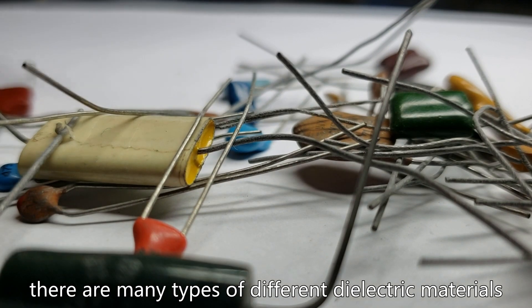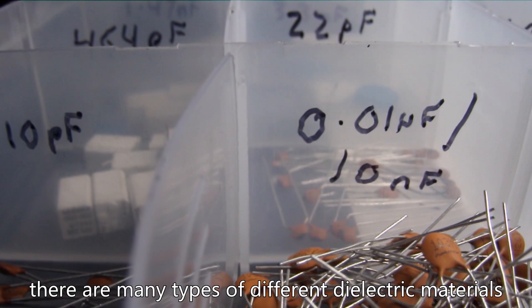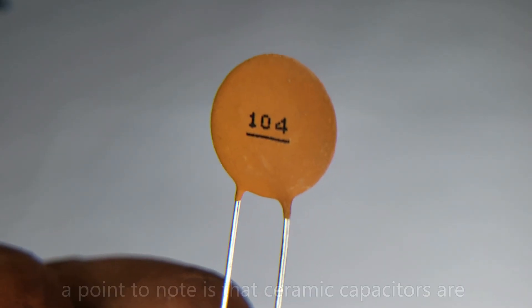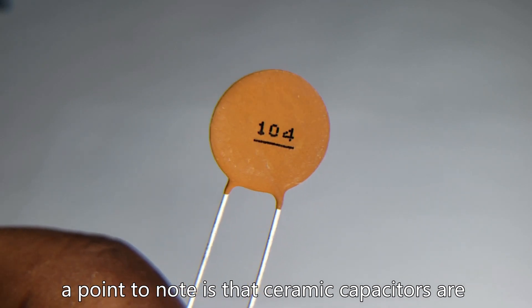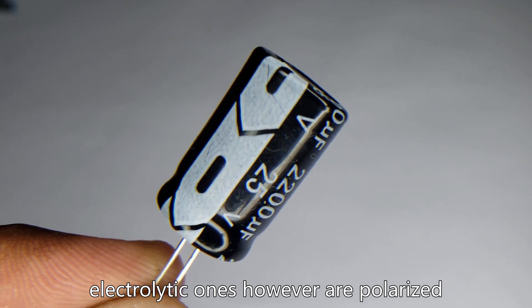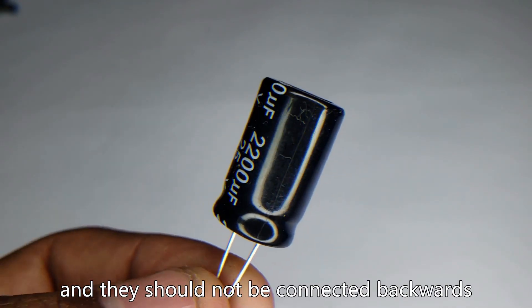There are many types of different dielectric materials, though electrolytic and ceramic ones are most commonly used in projects today. A point to note is that ceramic capacitors are not polarized. Electrolytic ones however are polarized and they should not be connected backwards.